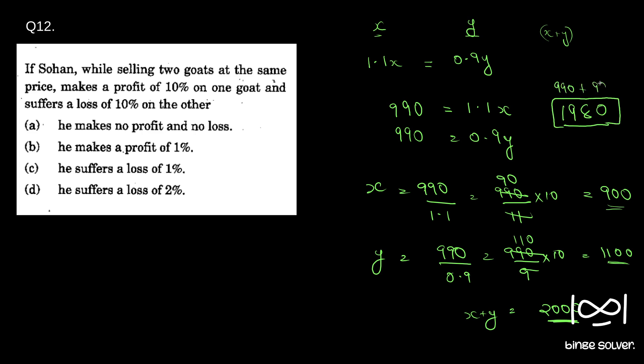So if you see, he made a net loss of 20 rupees. 2000 minus 1980, he made a net loss of 20 rupees. So 20 is 1% of this. You can clearly see that if you divide it by 100, you get 20. 20 is 1% of this. So he suffers a loss of 1% is the correct answer.